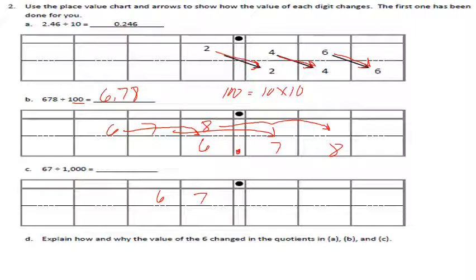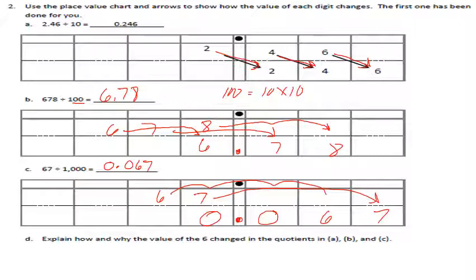So we have six and seventy-eight hundredths. The last one is sixty-seven divided by one thousand — move digits three place values right. We need a zero placeholder in the ones place whenever the decimal result is less than one. So 67 divided by 1000 equals sixty-seven thousandths. Explaining why: the six changed from tens to hundredths (divided by 10, one place), ones to thousandths (divided by 100, two places), and tens to thousandths (divided by 1000, three places).